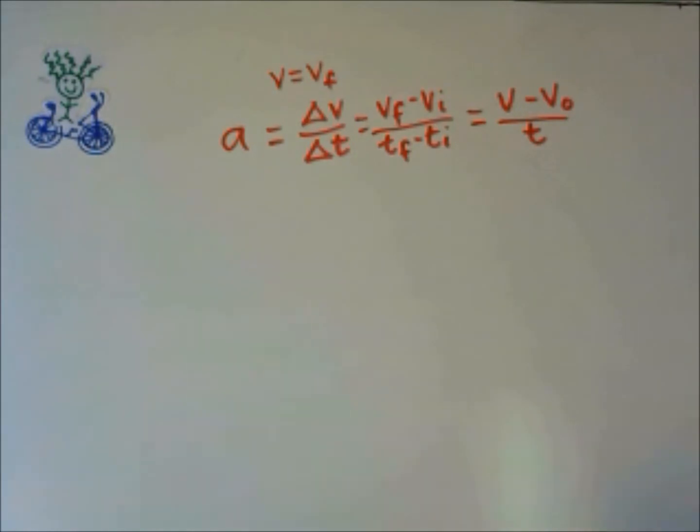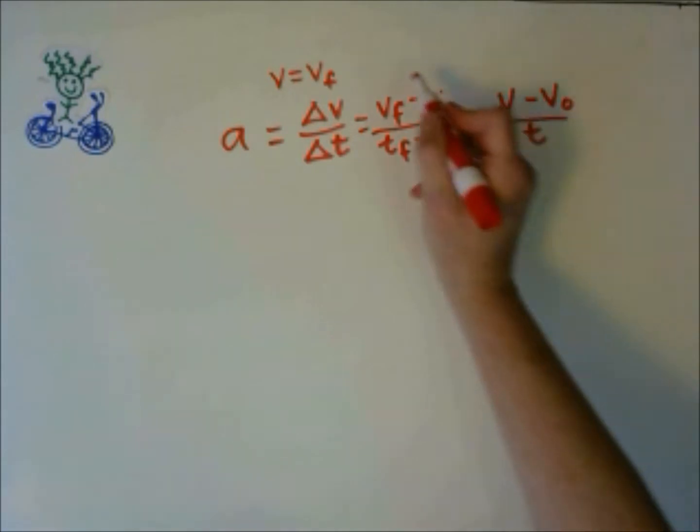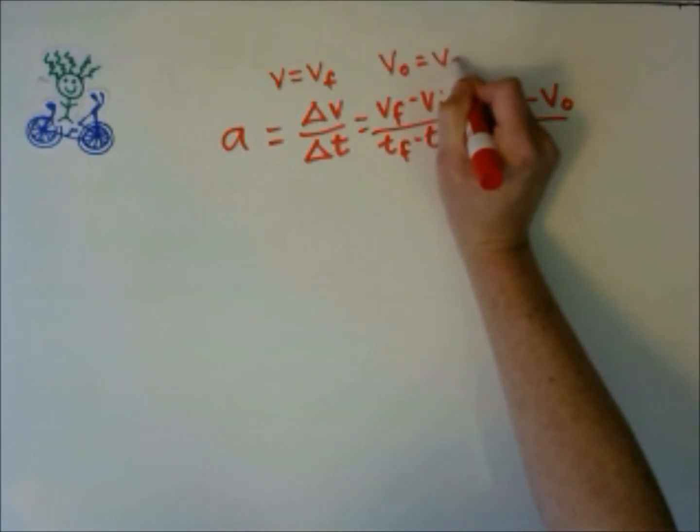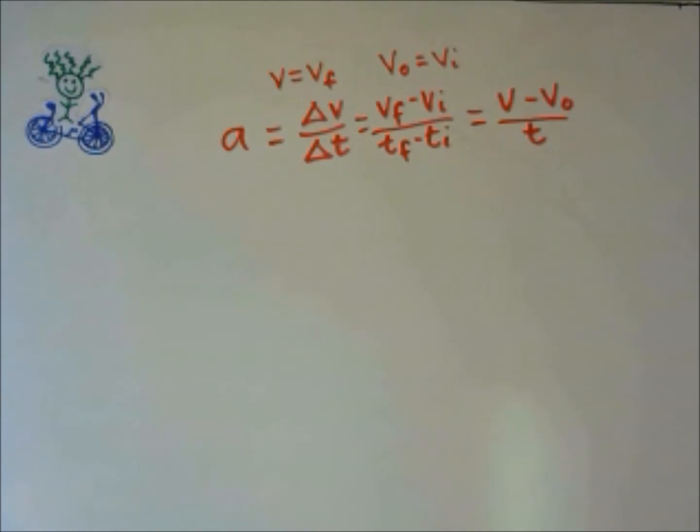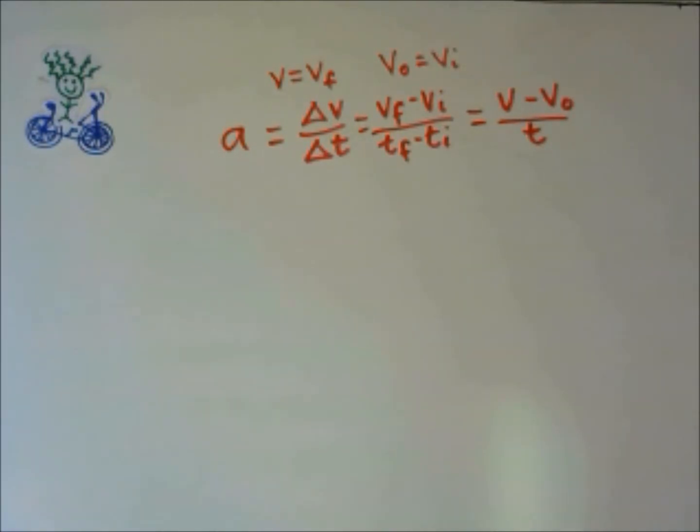And naught is something we use, that's the little subscript of a zero, that means initial. So V0 is initial velocity. And instead of writing final time minus initial time, we'll assume we always start initial time at zero, so we can just replace it with T.